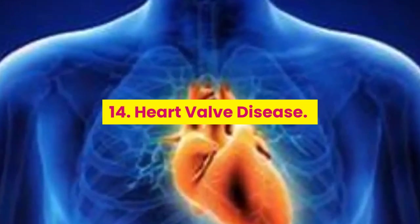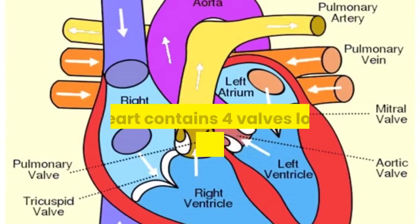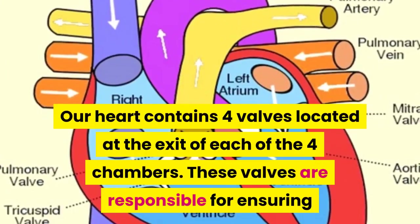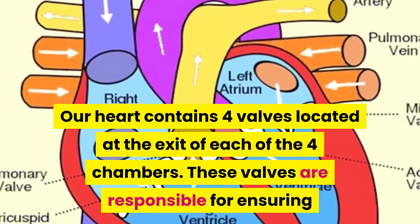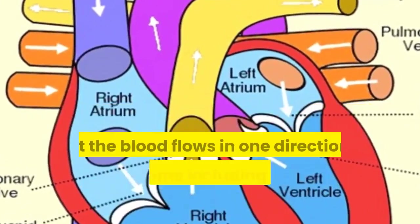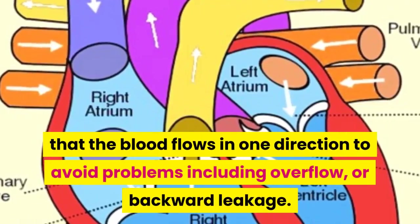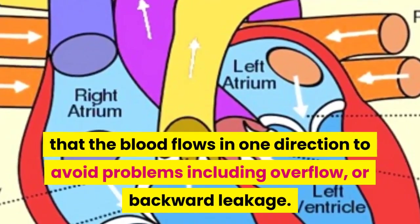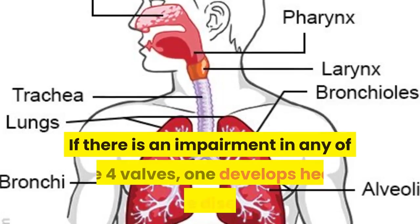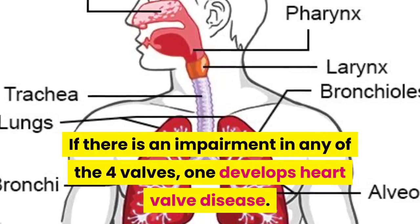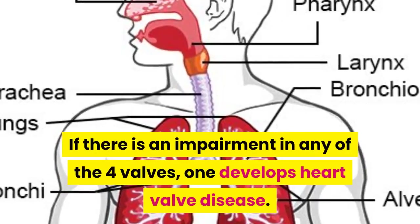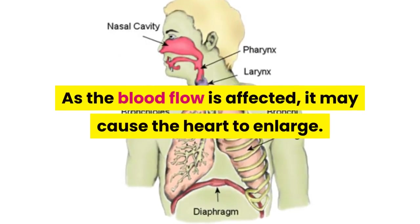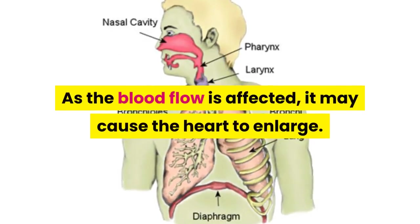14. Heart valve disease. The heart contains four valves located at the exit of each of the four chambers. These valves ensure that blood flows in one direction to avoid overflow or backward leakage. If there is an impairment in any of the four valves, one develops heart valve disease, and as blood flow is affected, it may cause the heart to enlarge.